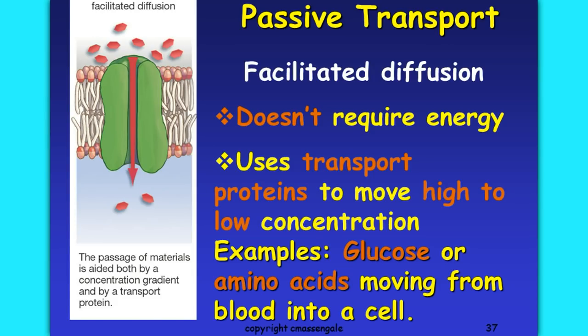Another form of passive transport is facilitated diffusion. This still doesn't require any energy. It uses transport proteins to move molecules from high to low concentration. Examples include glucose or amino acids moving from the blood into a cell.